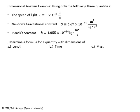I'm going to do this example on dimensional analysis or unit analysis. Here's the statement of the problem: using only the following three quantities — the speed of light, Newton's gravitational constant, and Planck's constant — how can you combine these things together in such a way to create a formula which has dimensions of length, time, or mass?